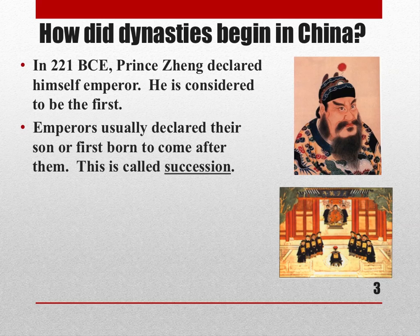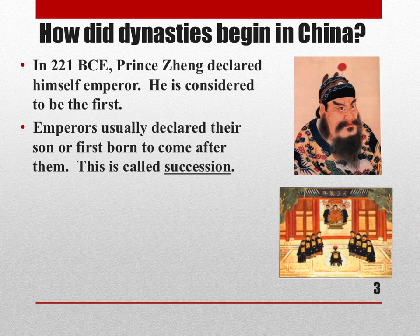Emperors usually declared their son or firstborn to come after them. So Prince Zhang's son would become emperor when he died. The only difference would be if he had no sons — then his eldest daughter would become empress. That handing of power from one family member to another is called 'succession,' which is a vocabulary word: when one family member takes power from another upon the death of the older family member.